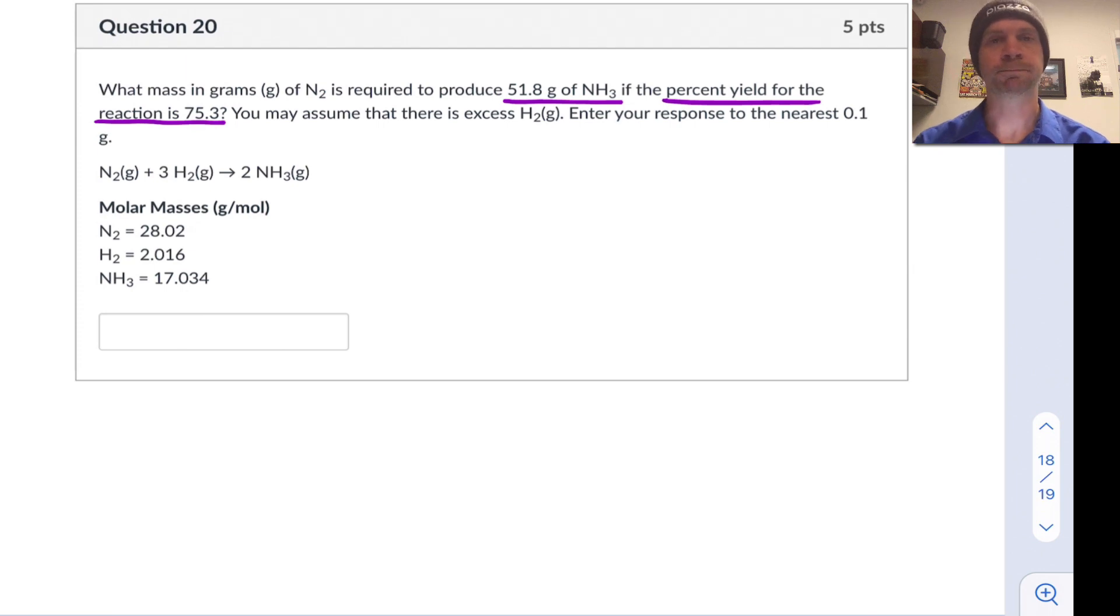Okay, how do we proceed here? Well, the first thing to do actually is to factor in the percent yield and think about the percent yield. We're trying to produce 51.8 grams of NH3. This is the actual yield that we want.